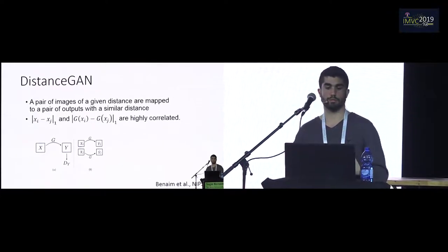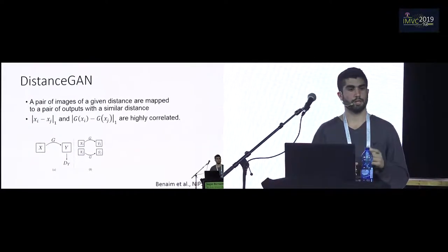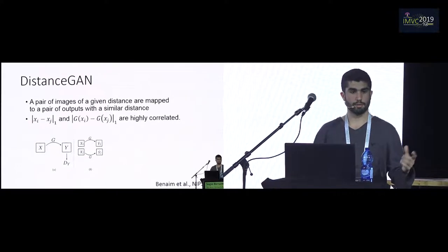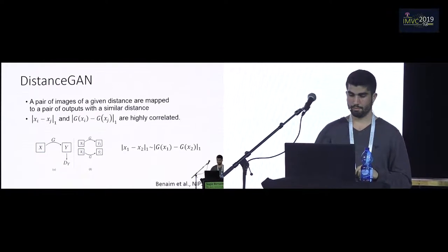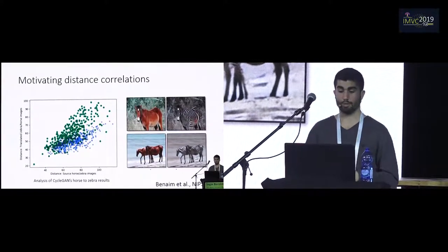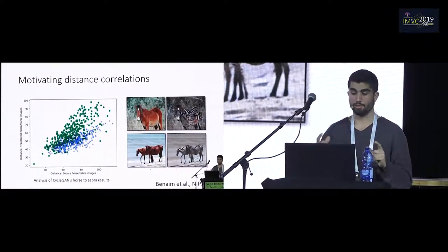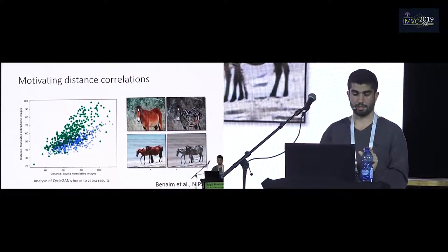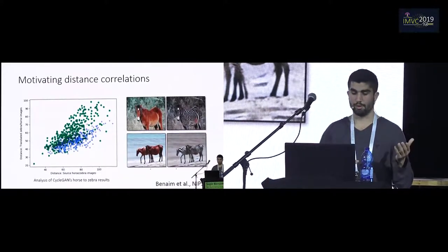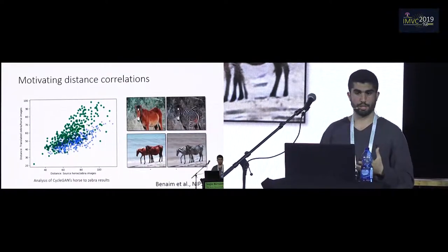Another approach to unsupervised translation is to ensure that if I take two images in domain A and translate them, the distance between them is roughly preserved. If I take two images of a horse and translate them to zebras, the distance between the horses should be highly correlated with the distance between the zebras. I show a diagram where the X axis is the distances between two randomly chosen horses, the Y axis is the distance between the matching pairs of zebras, and you can see a very high correlation between the distances.